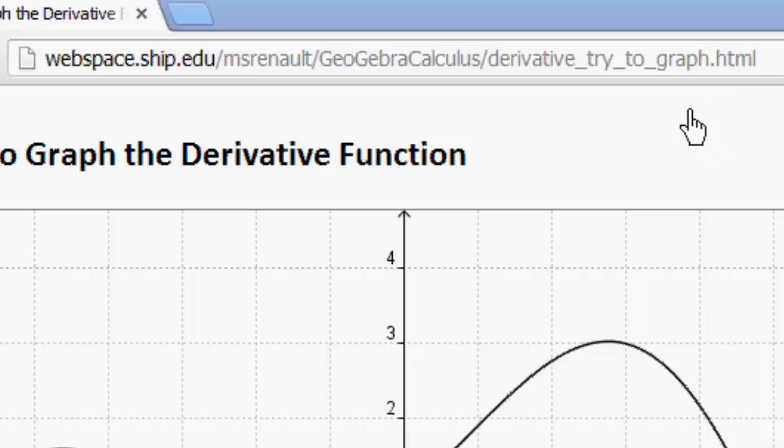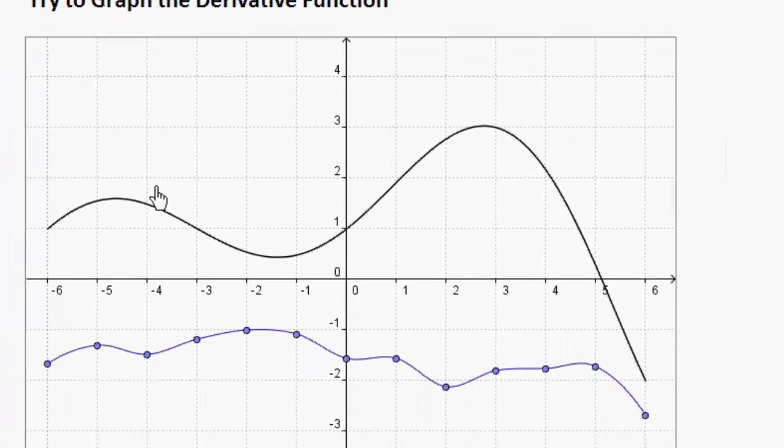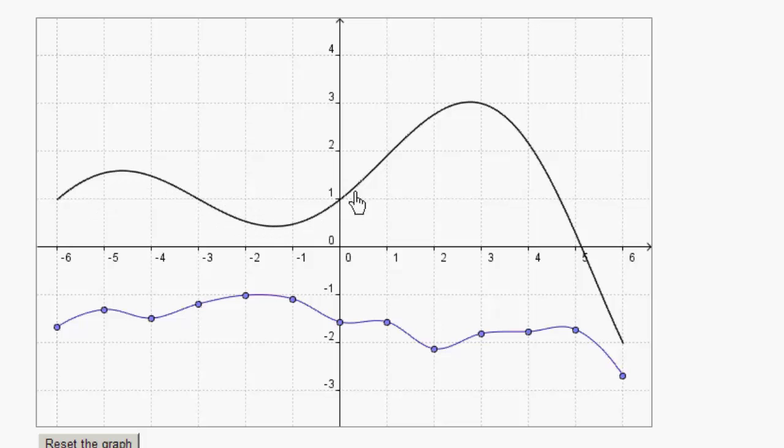So let me give you a demonstration of how this works. You have in this darkened black graph here, this is f of x, and we want to sketch the derivative, which is made by these dots down here.